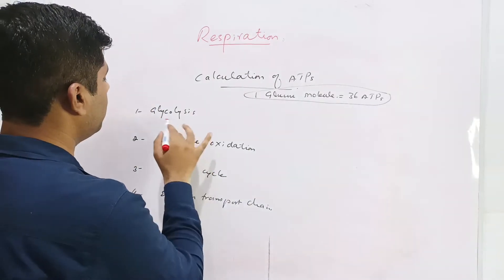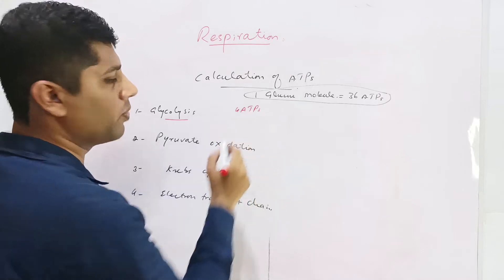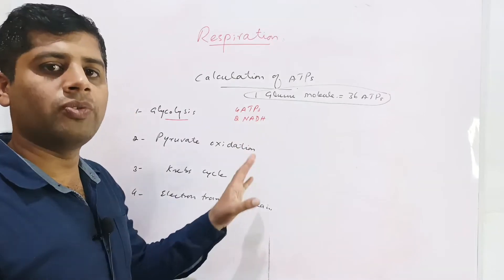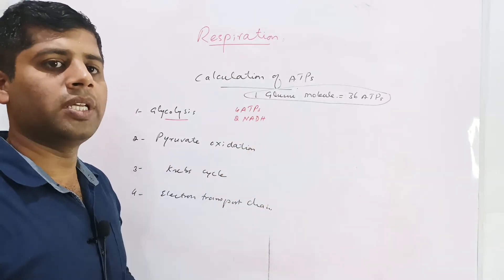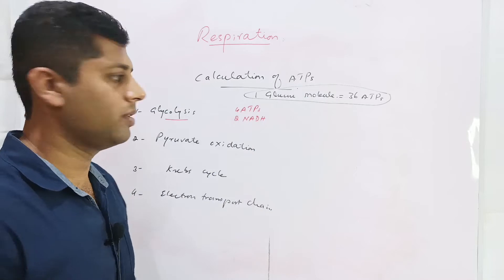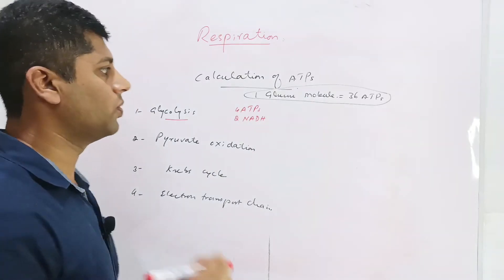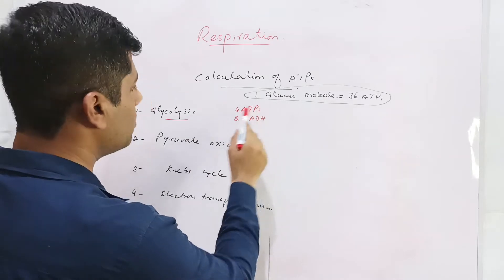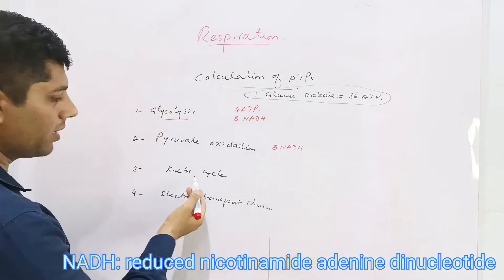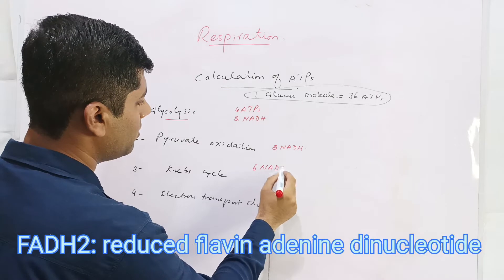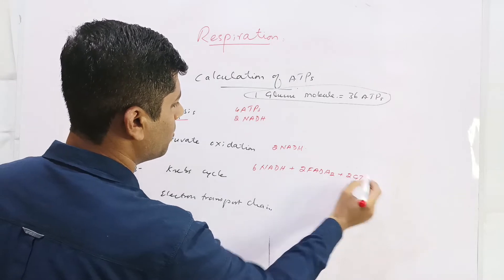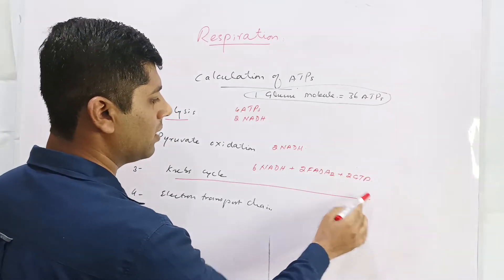In the first step, glycolysis, four ATPs and two NADH molecules are produced. In pyruvate oxidation, two NADH are produced. In the Krebs cycle, six molecules of NADH, two molecules of FADH2, and two molecules of GTP are produced. So these are the total energy carriers produced.